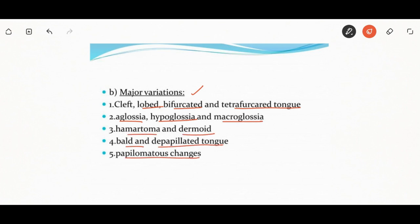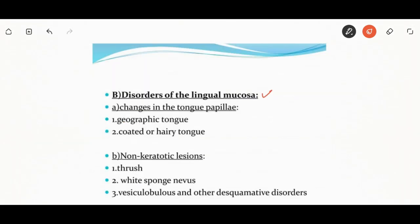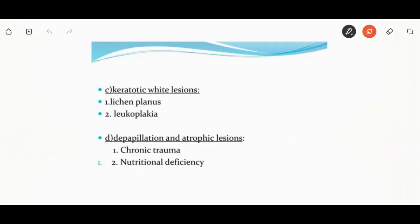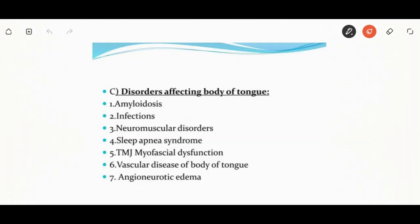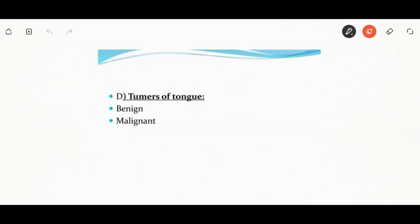Disorders of the lingual mucosa include changes in the tongue papilla such as geographic tongue or hairy tongue. Non-keratotic lesions include thrush, white sponge nevus, vesiculobullous and other disorders. Keratotic white lesions include lichen planus, leukoplakia, deep inflammation, lesions like chronic trauma, and nutritional deficiency. Hematological abnormalities, vascular diseases, chronic candidiasis, tertiary syphilis, and pigmentation like ulcers are also classified here. Disorders affecting the body of the tongue include amyloidosis, infection, neuromuscular disorders, sleep apnea, TMJ, myofacial dysfunction, vascular diseases, and angioneurotic edema.